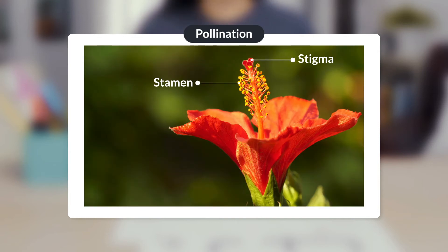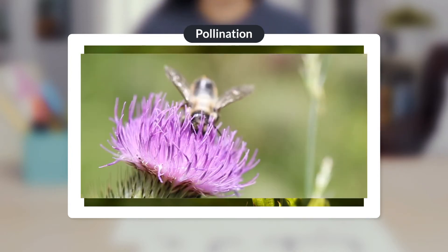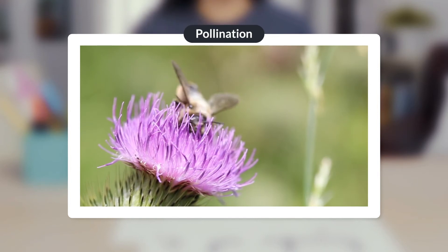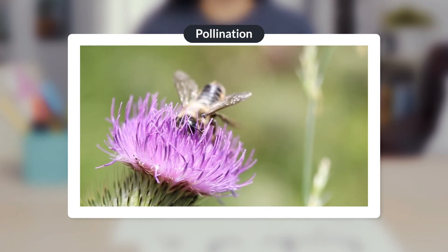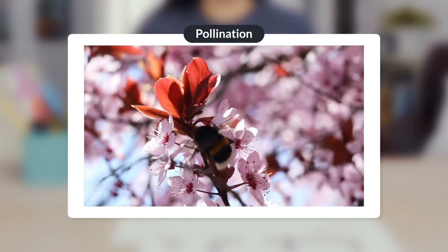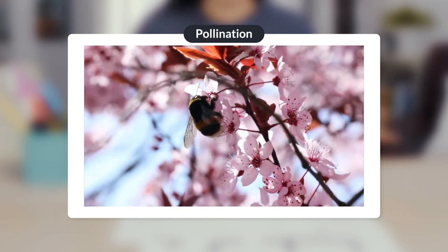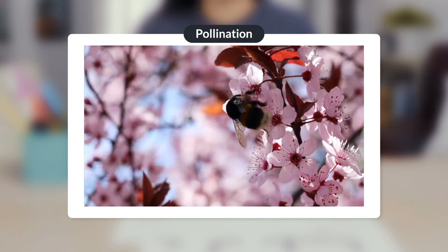In order for pollination to occur, pollen must move from the stamen of one flower to the stigma of another flower. Since plants can't move, pollinators, animals that eat pollen or drink nectar, move pollen from one plant to another as they continue to feed themselves.